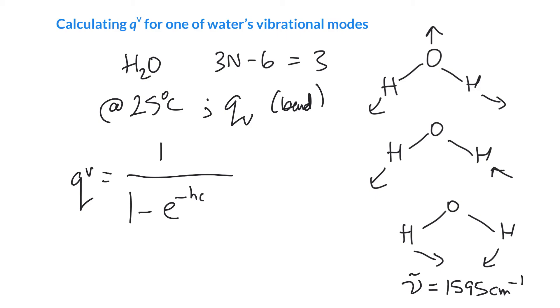So that is hc nu tilde. So we could use frequency, but if we're using wave numbers, we've got to multiply by the speed of light, hopefully in centimeters per second, divide by kT.